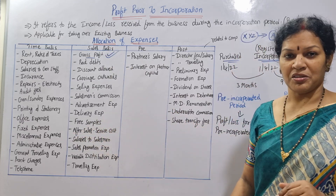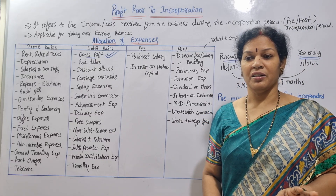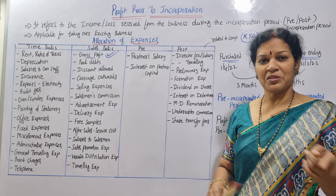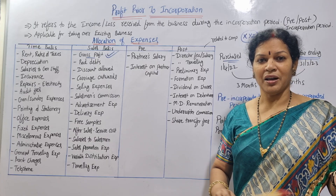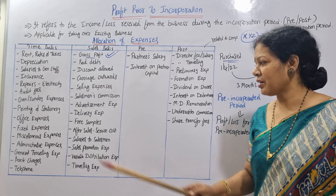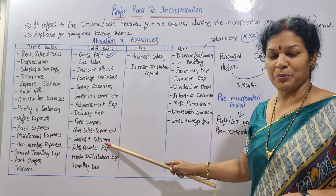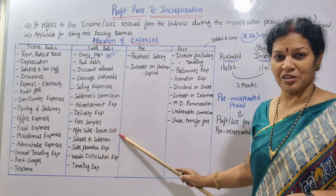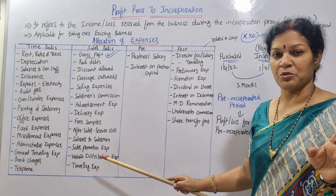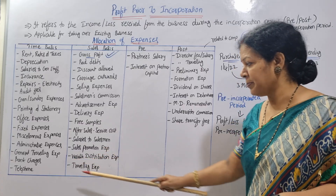After-sales service cost is also on a sales basis — for example, the service cost for items like an AC after purchase. Variable distribution expenses and traveling expenses for salesmen are also on a sales basis. So in summary, time basis and sales basis are the two main methods used to allocate expenses between pre and post periods.